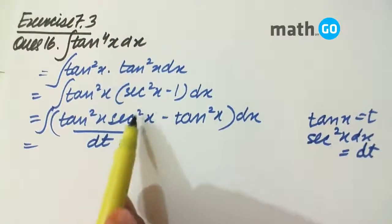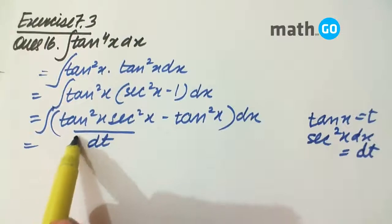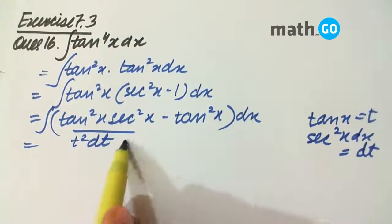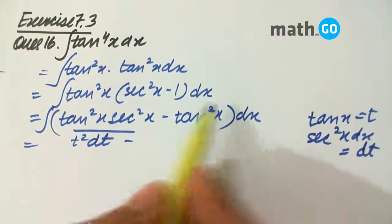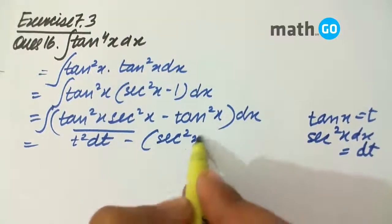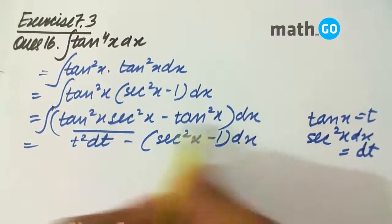So this is converted, this is still there. So t square dt minus, now tan square x can be further converted to sec square x minus 1 into dx.